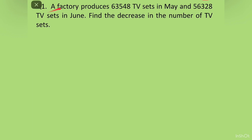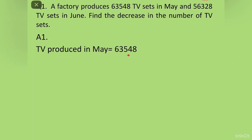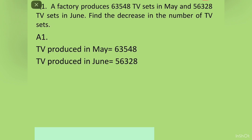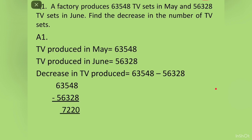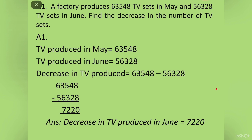Question 1 was: A factory produces 63,548 TV sets in May. We write: TV produced in May = 63,548. Then 56,328 TV sets in June, so TV produced in June = 56,328. Find the decrease: decrease in TV produced = 63,548 minus 56,328. We subtract and get the answer: decrease in TV produced in June = 7,220.